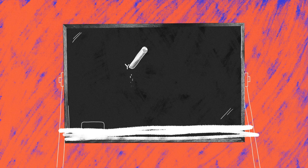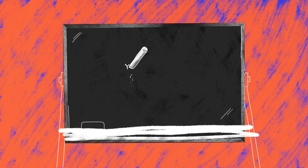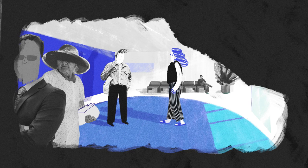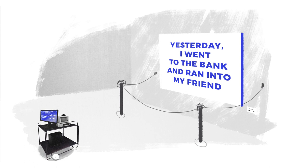It's how we know that the sentence, 'yesterday I went to the bank and ran into my friend,' describes a chance encounter between friends and not a senseless rampage. But if you're a computer trying to translate that sentence into another language, that distinction is anything but obvious.